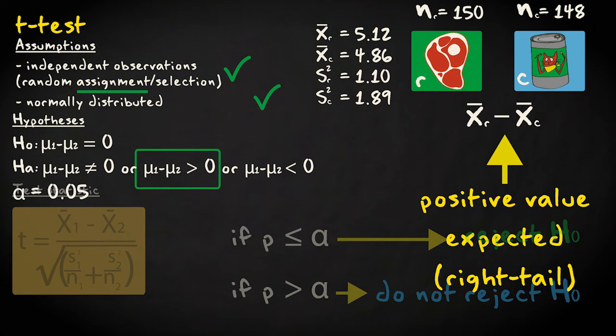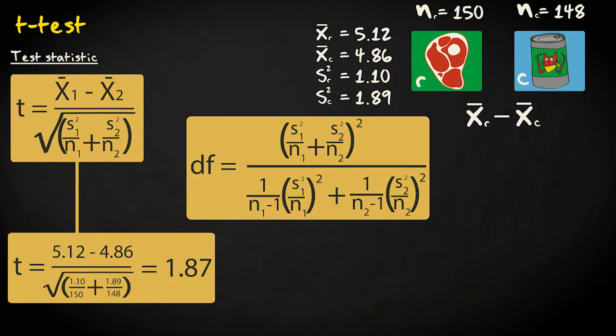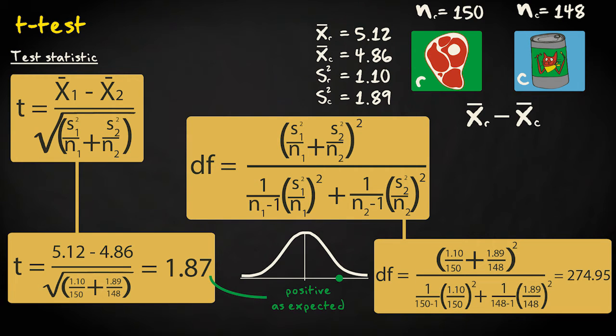I'll set the significance level to 0.05. The test statistic value is 5.12 minus 4.86 divided by the square root of 1.10 divided by 150 plus 1.89 divided by 148. This equals 1.87. As expected, the value is positive and falls in the right tail. The degrees of freedom are 274.95.